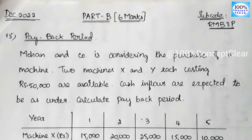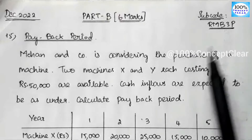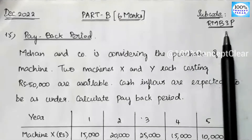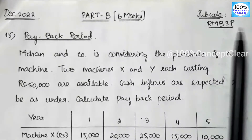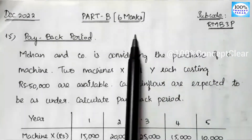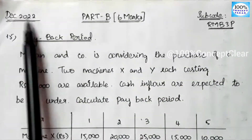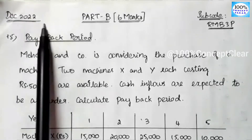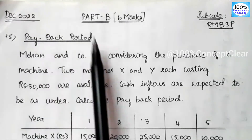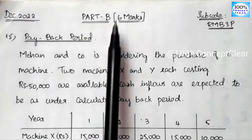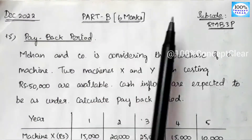Today we are going to cover the financial management subject. Our subject is RMB3P. We will see the December 2022 question paper. We will see Part B, that is the 6 marks sum.